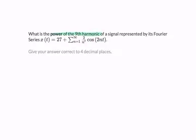The power of the ninth harmonic. So once we find the amplitude of the ninth harmonic, which is going to be a9, we simply find that squared divided by 2. So that's the power of the ninth harmonic.